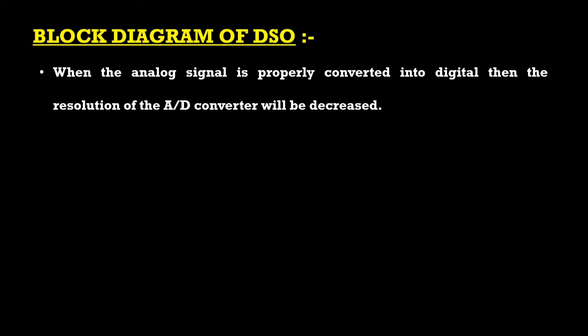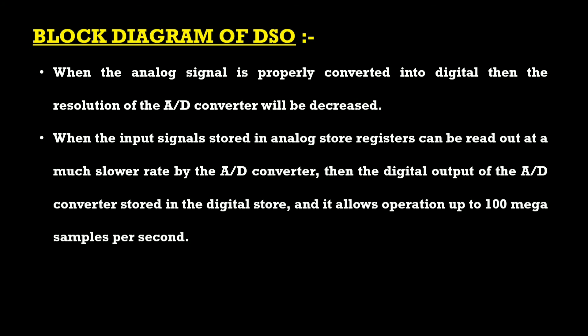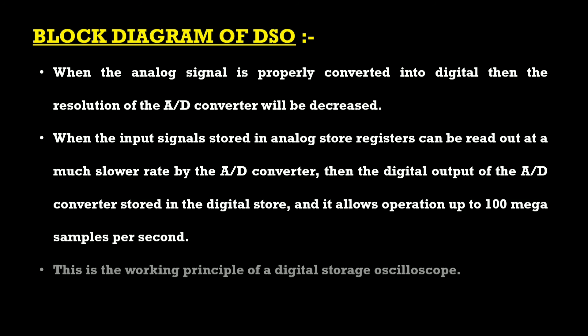When the analog signal is properly converted into digital, the resolution of the analog-to-digital (A/D) converter is maintained. The input signal stored in the analog store register can be read out at a much slower rate by the A/D converter. The digital output of the A/D converter is then stored in the digital store, allowing operation up to 100 mega-samples per second.